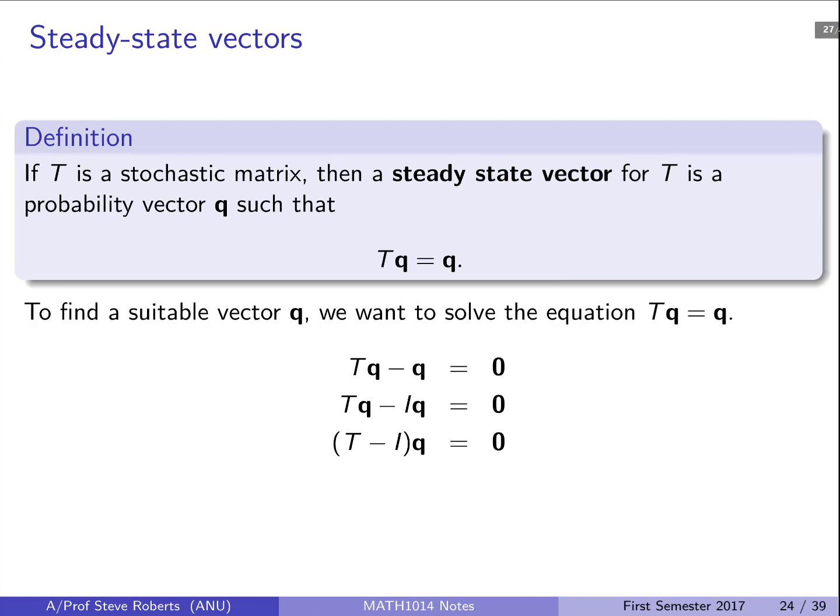So to find such a steady state vector, we need to solve TQ equals Q. Now that's exactly the same as TQ minus Q equals zero. And that's the same as TQ minus identity matrix times Q is equal to zero. And it's essentially solving T minus I times Q is equal to zero. So we're just trying to find the null space of T minus I. And of course, this is actually the eigenspace associated with one. Then that space will be the space of all steady state vectors.